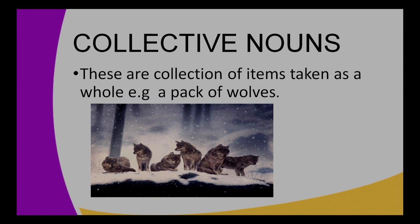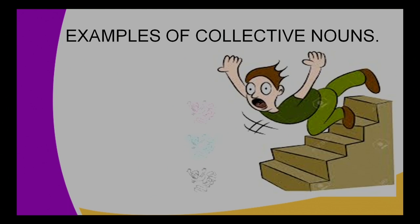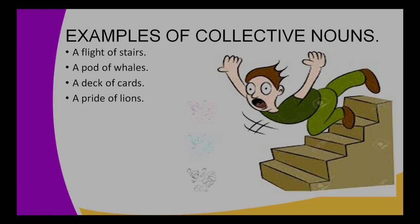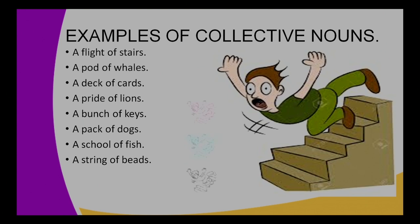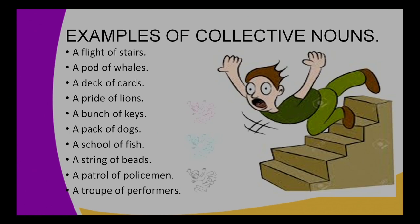Let's move on to collective nouns. Collective nouns are a collection of items taken as a whole — there are many of them but they are treated as one item. Examples include: a pack of wolves, a flight of stairs, a pod of whales, a deck of cards, a pride of lions, a bunch of keys, a pack of dogs, a school of fish, a string of beads, a patrol of policemen, and a troop of performers. All those belong to the group of collective nouns.